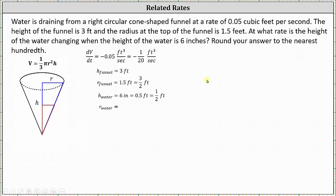We don't know the radius of the water. We also don't know the rate at which the radius is changing as the water drains from the funnel. And our goal is to find dh/dt when the height of the water is equal to 0.5 feet, where the h in dh/dt is the height of the water, not the height of the funnel.